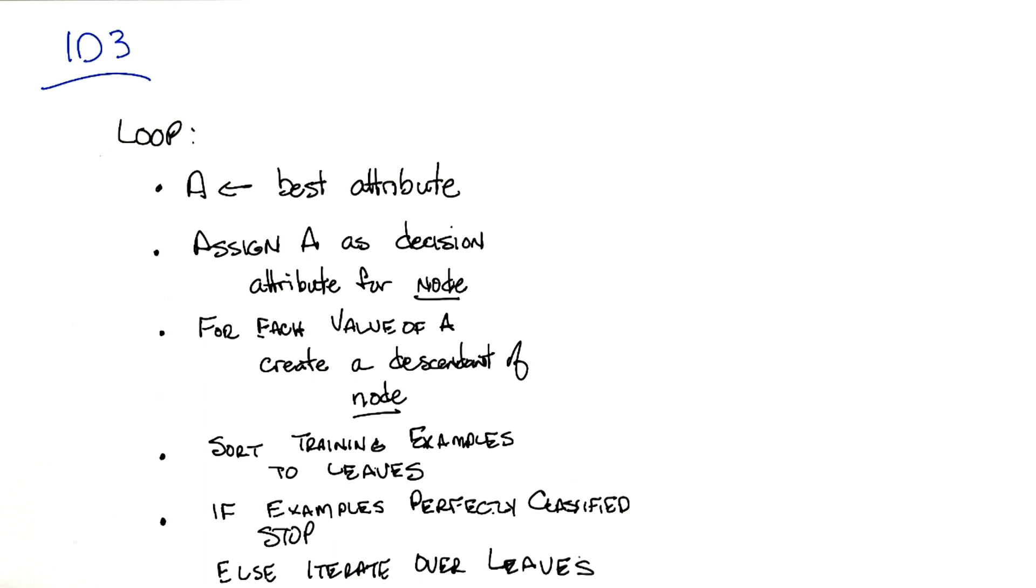Here's the ID3 algorithm. You're simply going to keep looping forever until you've solved the problem. At each step you're going to pick the best attribute and we're going to define what we mean by best or a couple of different ways we might define best in a moment. And then given the best attribute that splits the data the way that we want, assign that as a decision attribute for node.